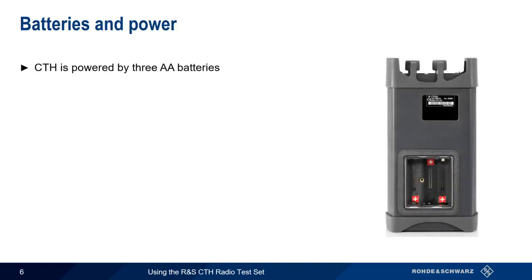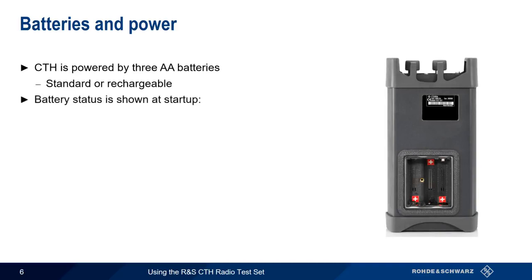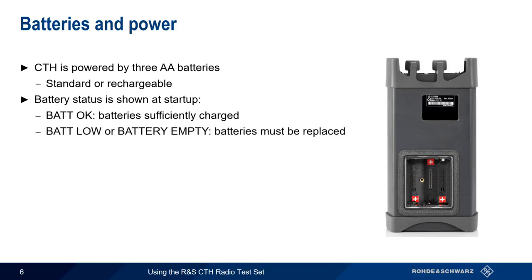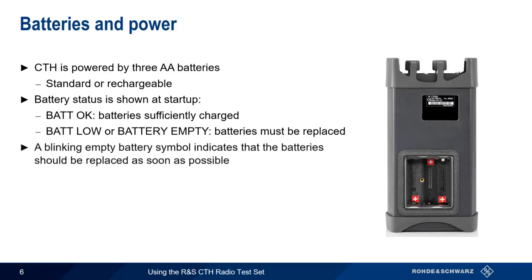The CTH is powered by three AA batteries. These can be either standard or rechargeable batteries. The status of the batteries is shown at startup. Bat-OK means that the batteries have sufficient charge, whereas Bat-Low or Bat-Empty means that the batteries need to be replaced. A small blinking empty battery symbol indicates the battery should be replaced as soon as possible.